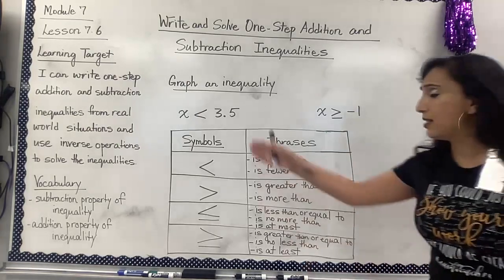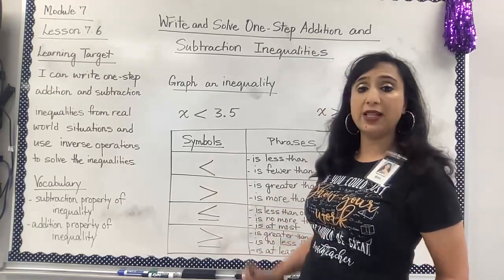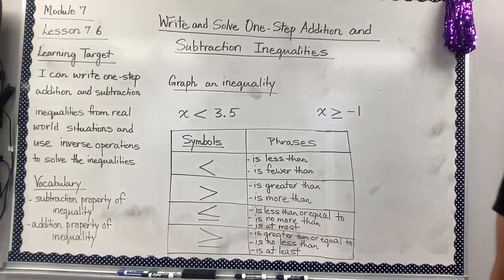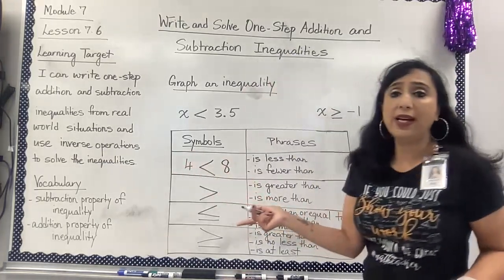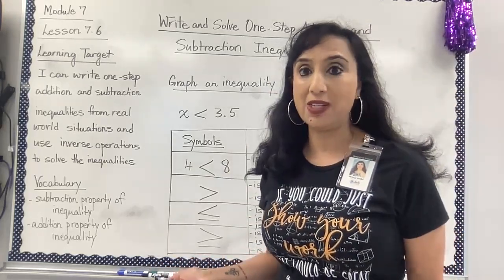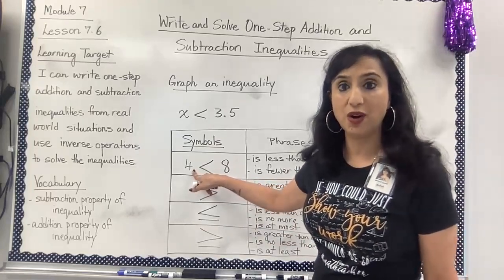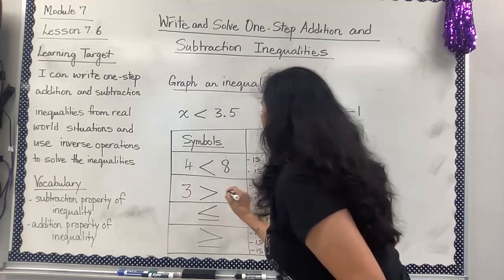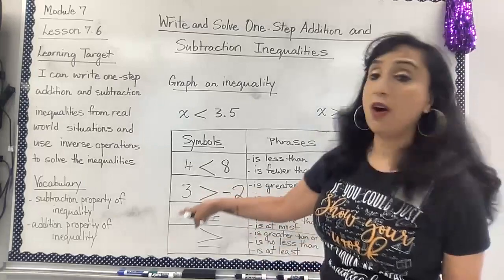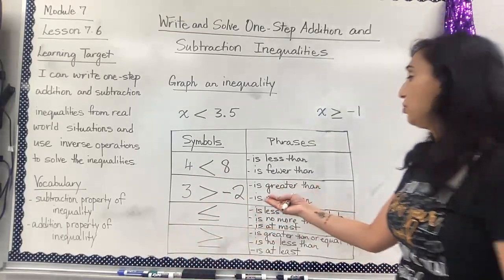The symbols for inequalities are: less than, greater than, less than or equal to, and greater than or equal to. For example, 4 is less than 8 — any number less than 8 is a solution of that inequality. For greater than, 3 is greater than negative 2; 0 and 10 are also greater than negative 2. All numbers greater than negative 2 satisfy that inequality.